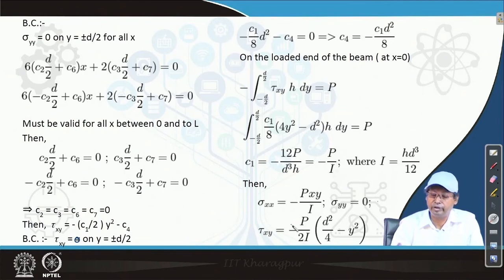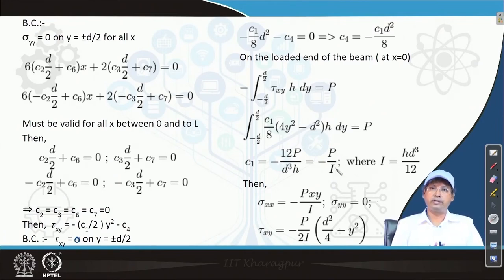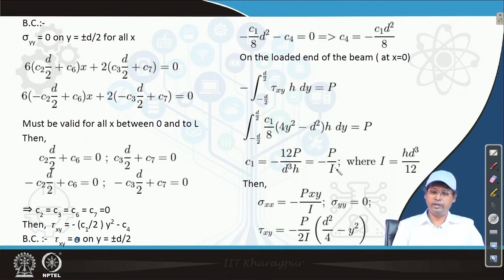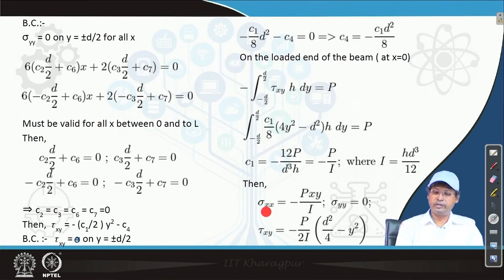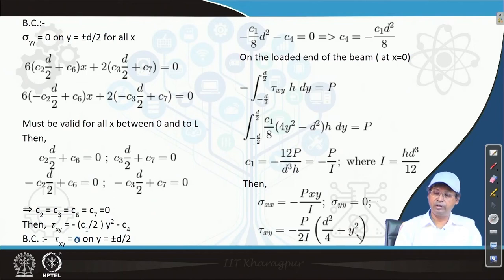With all 9 constants now known, we have the final expressions. Sigma_xx = -Pxy/I. Sigma_yy = 0 everywhere. Tau_xy depends on y² and the constants accordingly. In the next portion we will solve for displacements.